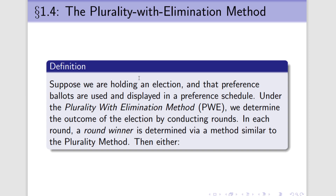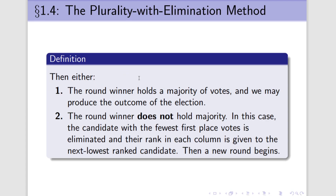PWE happens in rounds. In the very first round, we're going to tabulate the votes — the first place votes only — and the candidate with the most first place votes is the winner of that round. However, once we figure out who has the most first place votes, we ask: does that candidate hold majority? One of two things can happen. Either they hold majority, in which case we skip any other steps and go directly to the outcome, and then we're basically just using the plurality method.